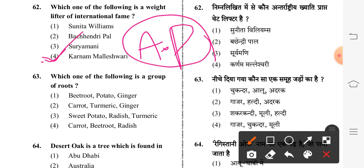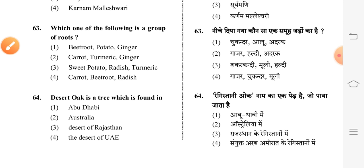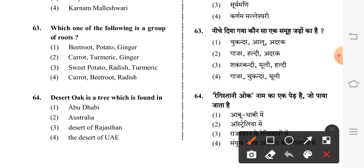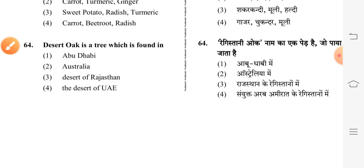This is a very important topic asked every year. Question 63: which of the following is a group of fruits? Fourth option is correct: carrot, beetroot, radish. Question 64: desert oak is a tree found in — second option: Australia.